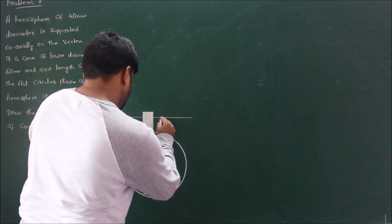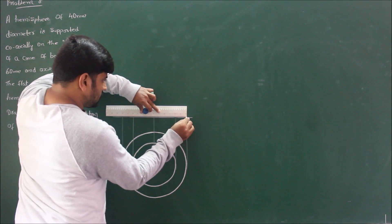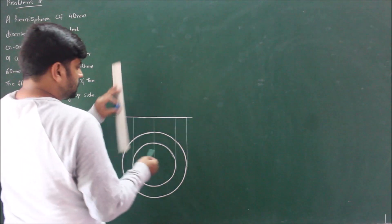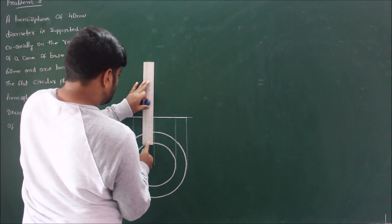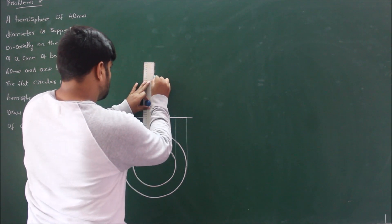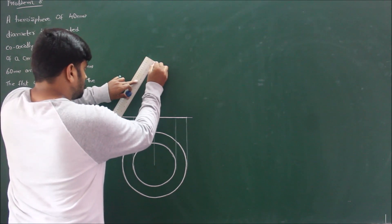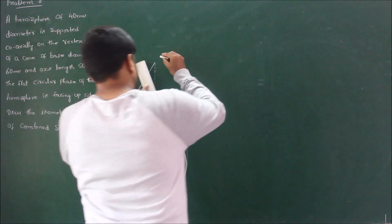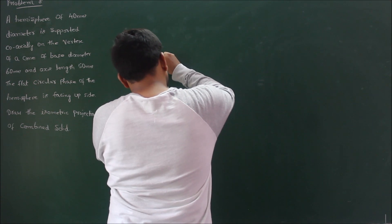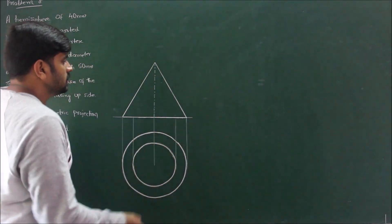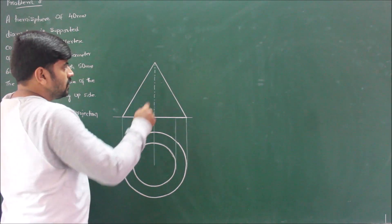Take the projection vertically upwards. Mark the base of the cone at 60 mm diameter, then mark the axis of the cone for a height of 50 mm. Connect the corners to represent the cone, which gives us two slant generators. This completes the front view and top view of the right circular cone.